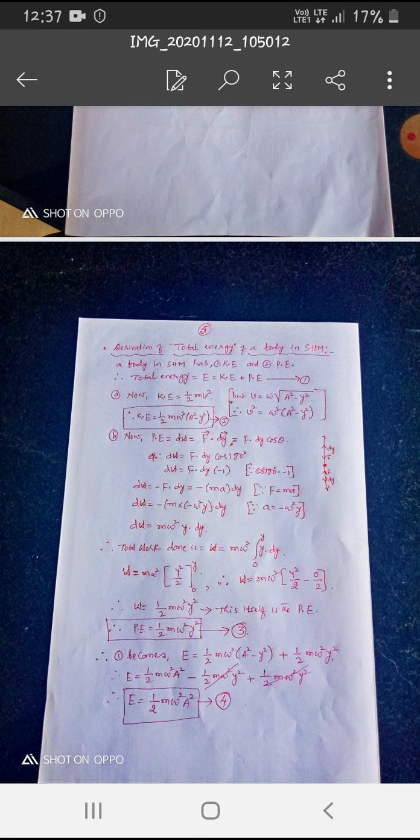When we solve this, we should cancel. Therefore, E is equal to, or total energy of SHM, E is equal to half into Mw square by A square. This is the equation we get when we solve this.